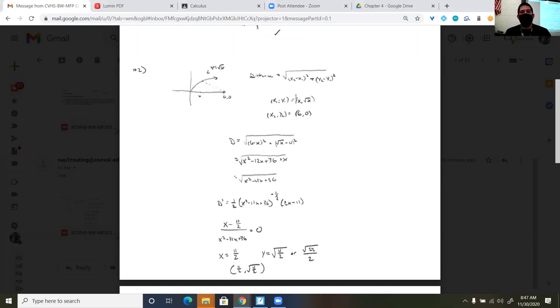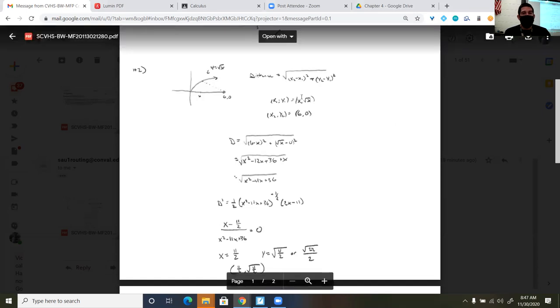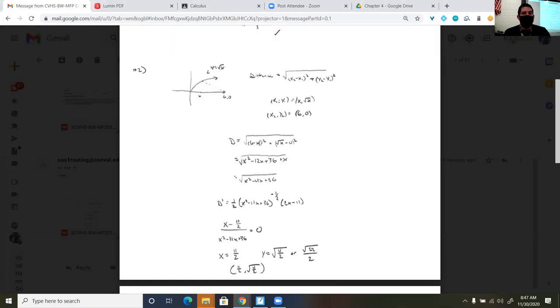So I was able to conclude that my x sub 1 y sub 1 was at x comma root x, and my x sub 2 y sub 2 was at 6, 0. So I plugged it into the distance formula here. This was 6 minus x, I squared that to get this quadratic. This was the square root of x minus 0 squared that to get just x. And then I simplified.